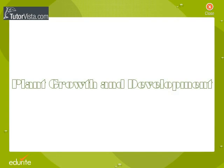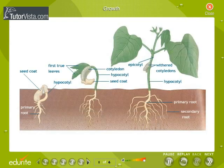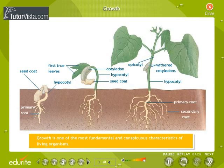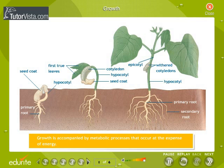Plant growth and development. Growth is one of the most fundamental and conspicuous characteristics of living organisms. It is defined as an irreversible permanent increase in size of an organ or its parts or even of an individual cell. Growth is accompanied by metabolic processes that occur at the expense of energy. Germination and growth of a bean seedling is illustrated here.